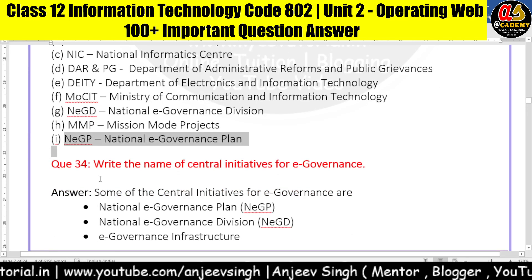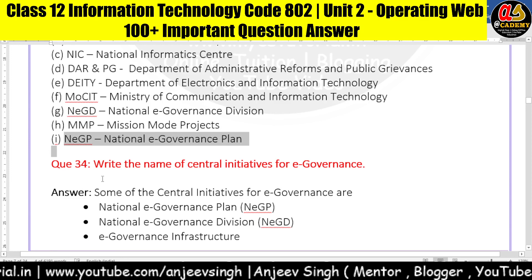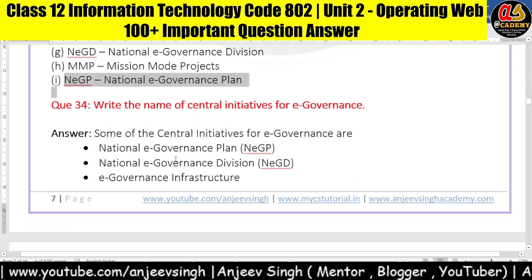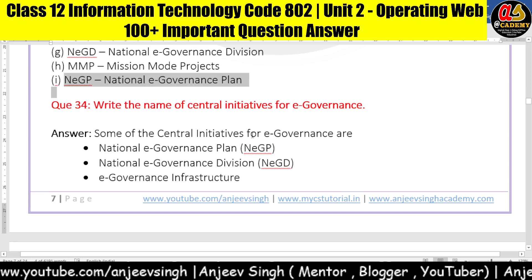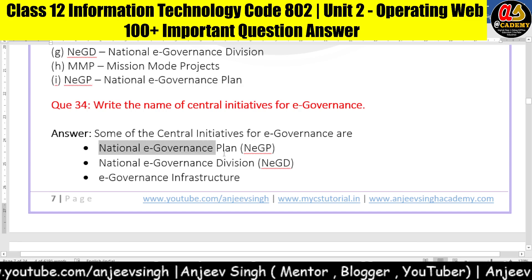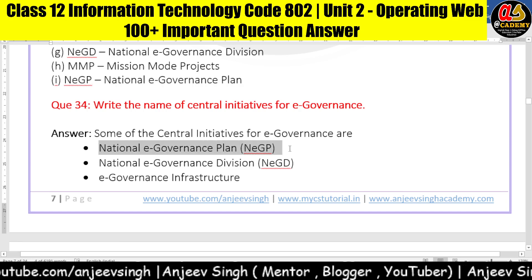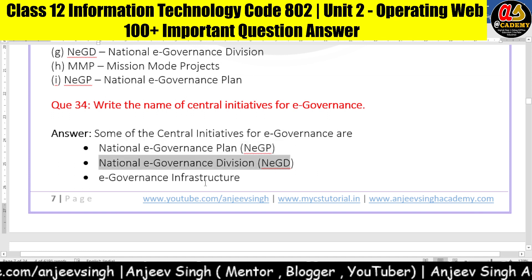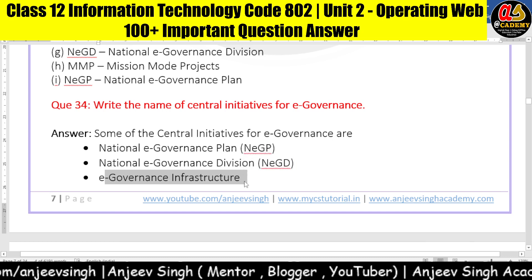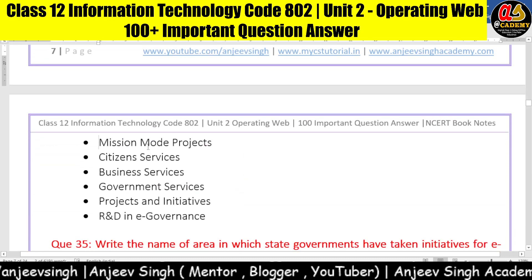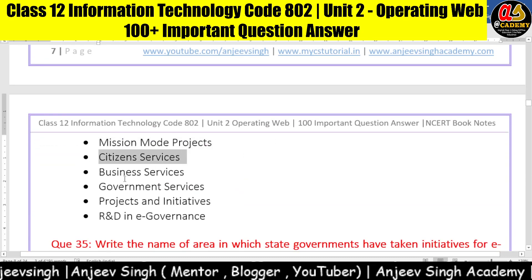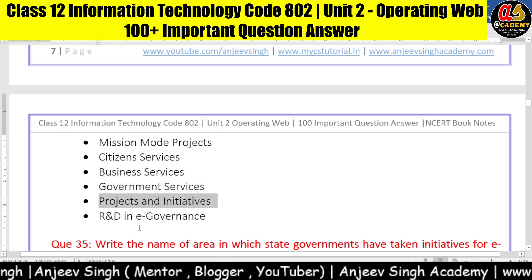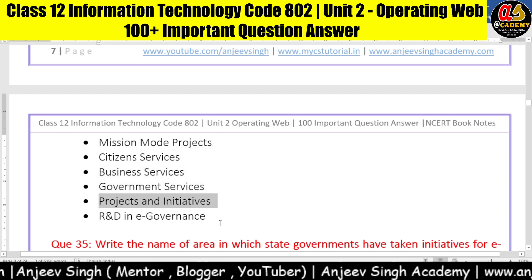Now let's look at question number 34: write the name of the Central Initiatives for E-Governance. Some of the Central Initiatives for E-Governance are: National E-Governance Plan (NEGP), National E-Governance Division (NEGD), E-Governance Infrastructure, Mission Mode Projects, Citizen Service, Business Service, Government Service Projects and Initiatives, and R&D in E-Governance.